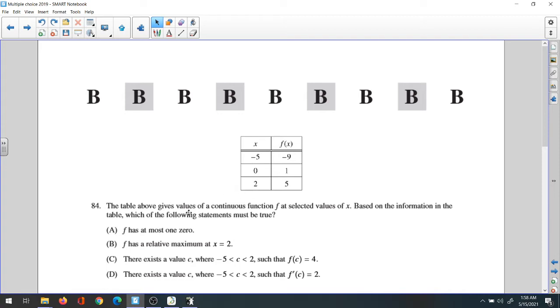Option D: They tell us there exists a value c where negative 5 is less than c is less than 2 such that f dash of c equals 2. Yes, if you find the derivative: negative 9 minus 5 is negative 14 over negative 5 minus 2 is negative 7. Negative 14 over negative 7 is 2, that's true.